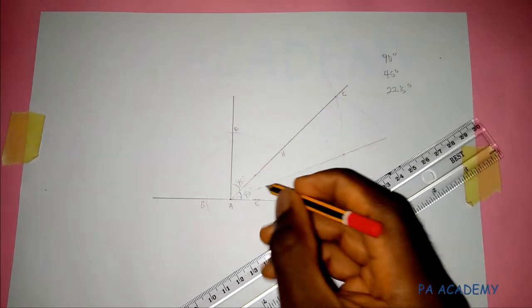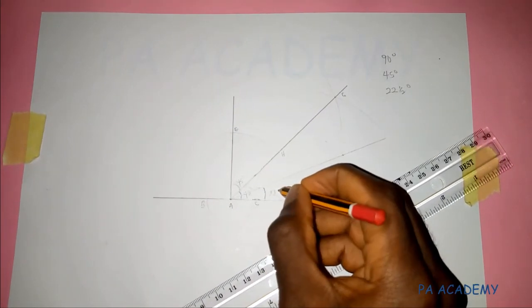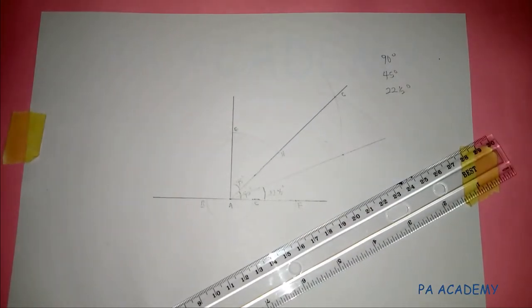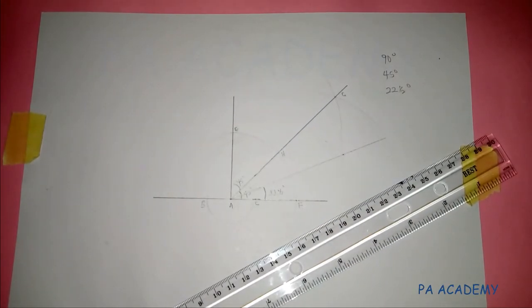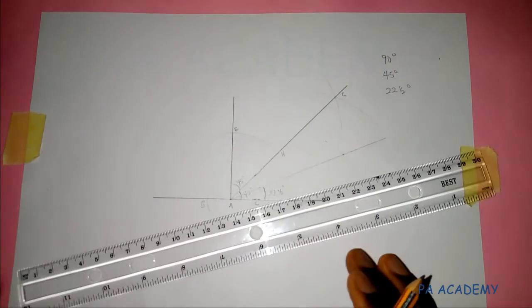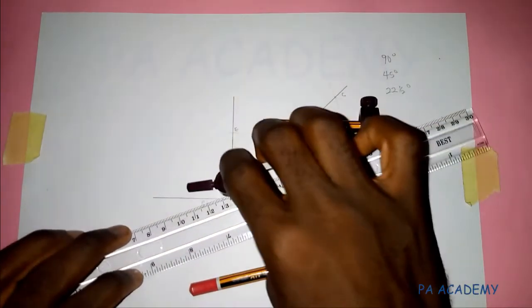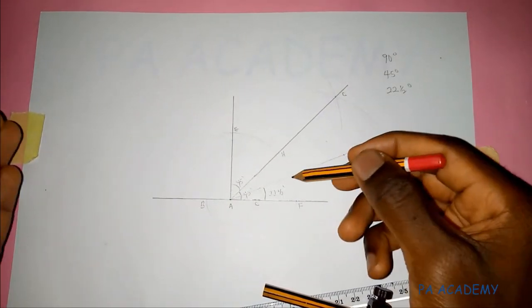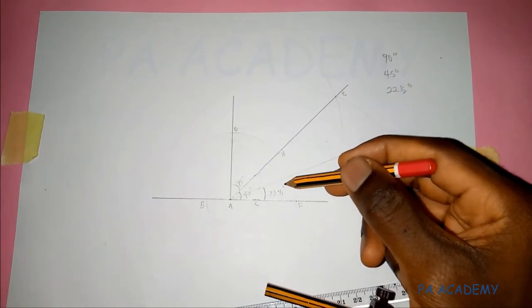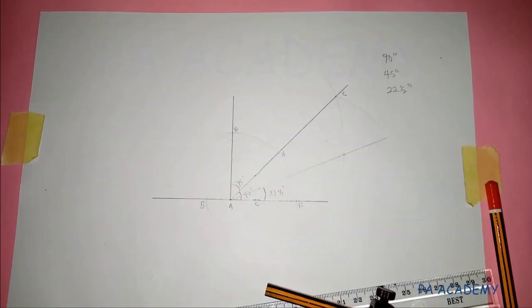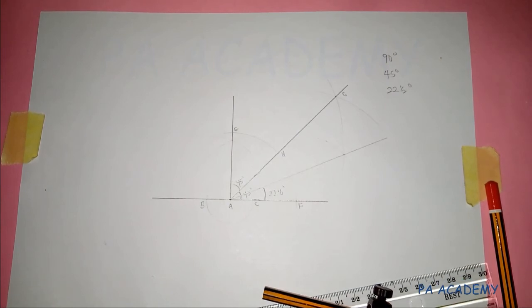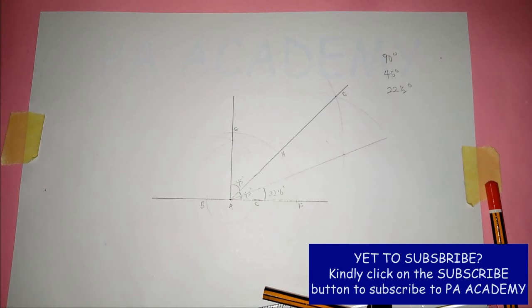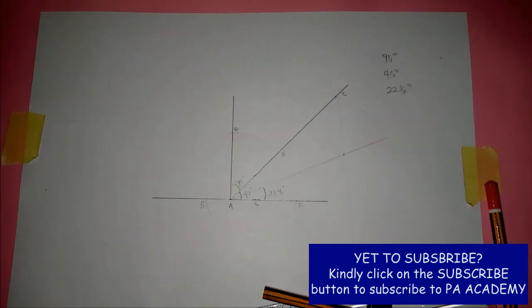With this, this angle represents angle 22 and a half degrees. So that is how you construct angle 90, angle 45, and angle 22 and a half. All you need is your ruler, your pencil, and your compass. You can even go further to divide angle 22 and a half into angle 11.25 degrees. That is it for this video from PA Academy. If you like this video, give it a thumbs up, kindly click on the subscribe button, and I will see you all in another video. Thank you.